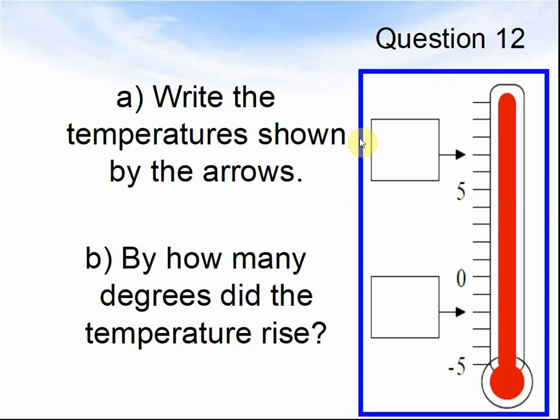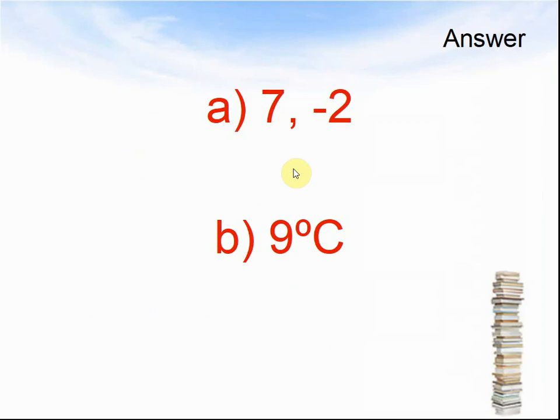Let's look at the next question. Question 12. Write the temperatures shown by the arrows. By how many degrees did the temperature rise? From here to here. Pause the video and answer the question. Here come the answers. The answer was 7 and minus 2, and it rose by 9 degrees centigrade.